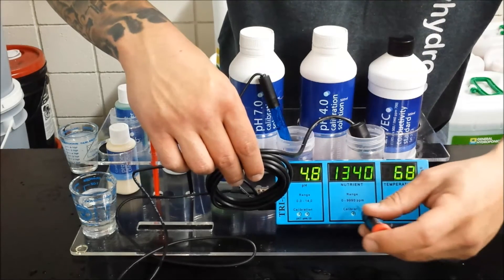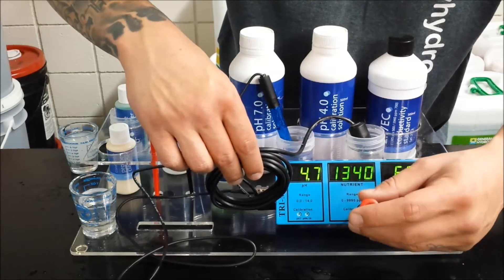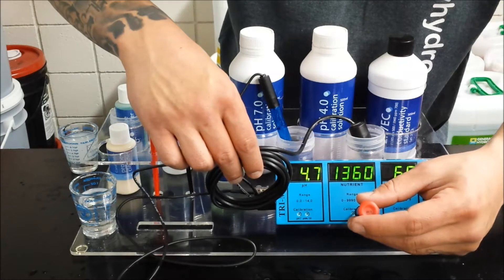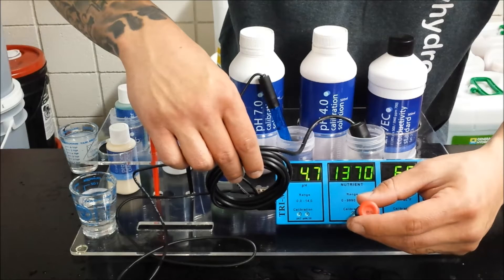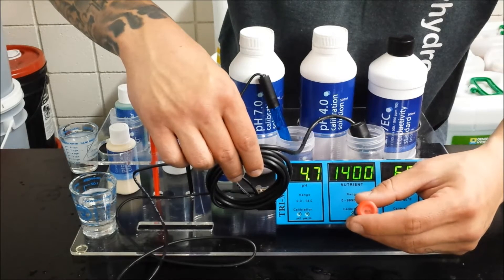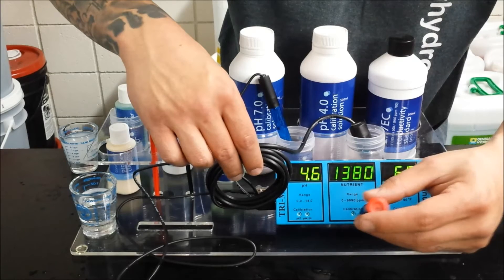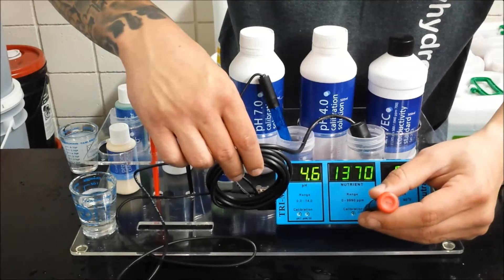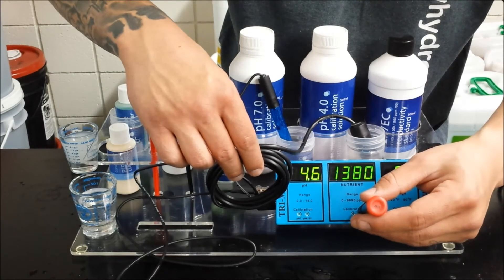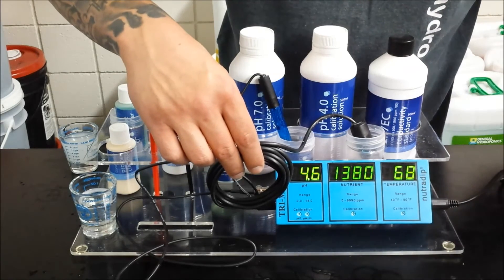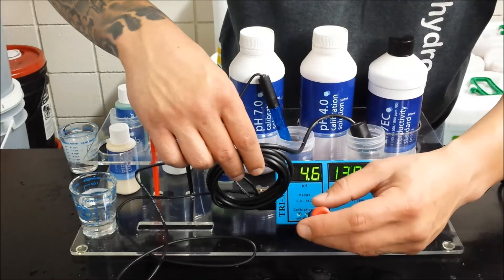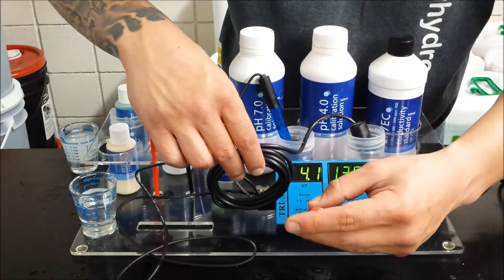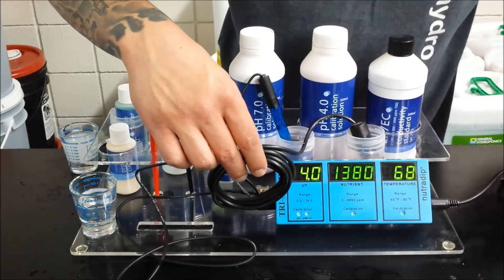While we're waiting for the 4 to settle, you can set your ppm, which this is 1380 solution that I'm using here. And the pH is settled, so now you can adjust the 4 screw until it reads 4.0.